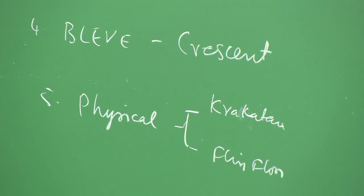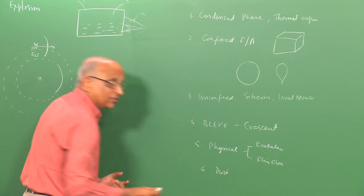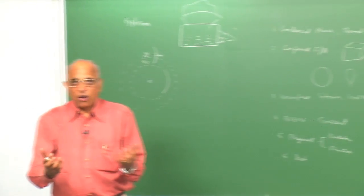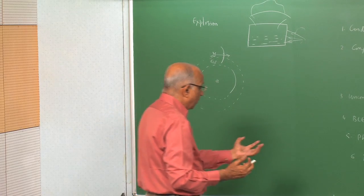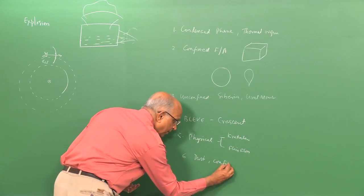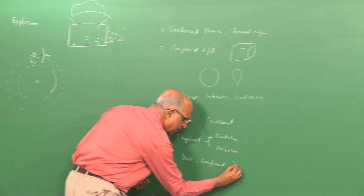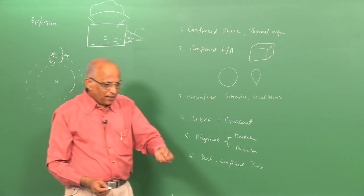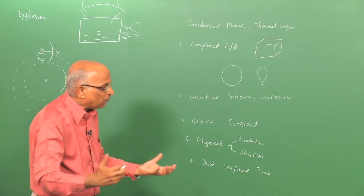The sixth category was dust explosions. Even everyday foodstuffs like corn flour, wheat flour, or sugar powder can be explosive when mixed with air, especially in a confined geometry. We discussed an explosion at Turin, Italy, where a boy took corn flour in one hand and a candle in the other — it burst into flame and exploded.